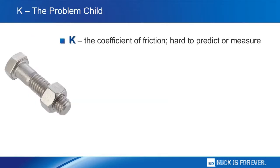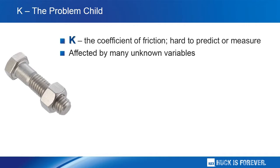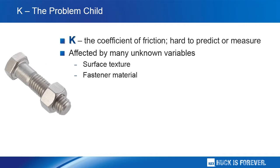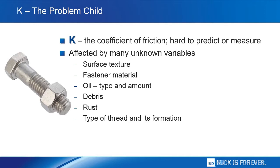K, the coefficient of friction, is the problem child in this whole equation. It is very hard to predict or measure, and it is affected by a number of variables: surface texture, fastener materials, oil, debris, rust, type of thread and formation, humidity, and much, much more.